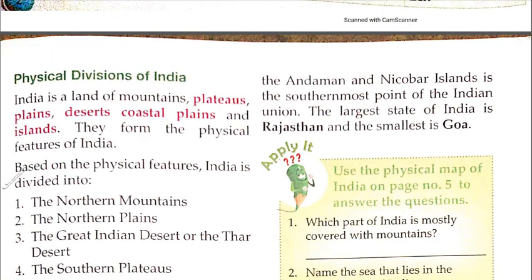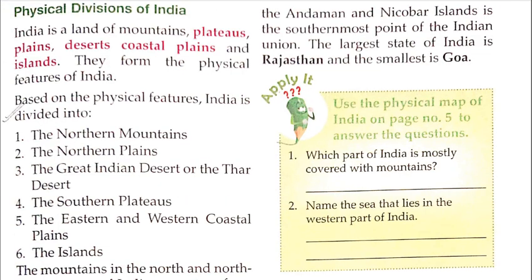The largest state of India is Rajasthan and the smallest is Goa. So India's biggest state is Rajasthan and the smallest state is Goa.